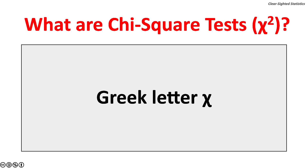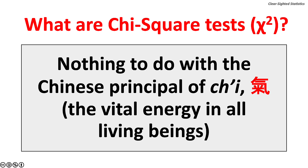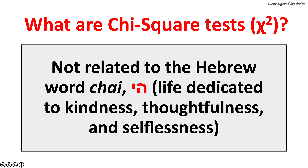Chi refers to the 22nd letter of the Greek alphabet. Chi has nothing to do with the Chinese principle of Chi, which stands for the vital energy of all living beings. It is also not related to the Hebrew word Chi, which stands for a life dedicated to kindness, thoughtfulness, and selflessness.